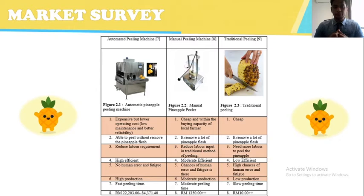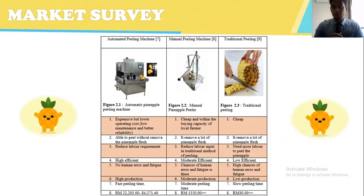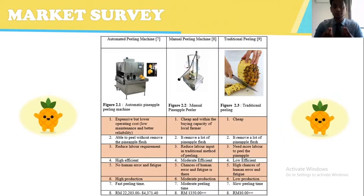In terms of error and fatigue, there is no human error or fatigue for the automated peeling machine because the process is fully done by the machine. For the manual peeling machine, there are chances of human error and fatigue. In terms of production rate, the automated peeling machine has a higher production rate, manual has a moderate range, and traditional peeling has a low production rate.